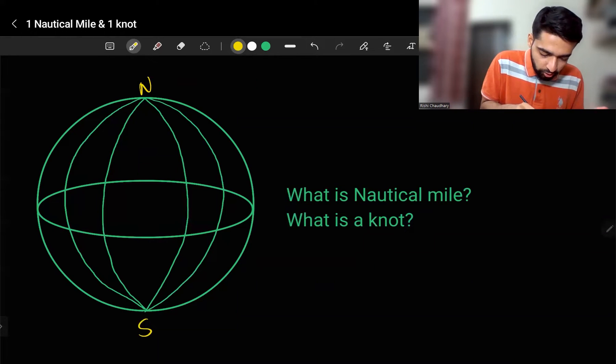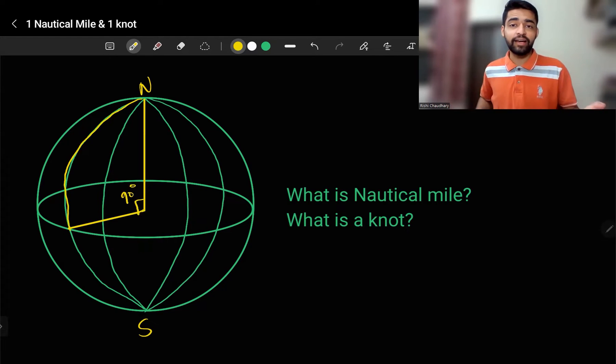Now if I go to the center of the Earth and make an arc like this, this is nothing but my longitude as well as my arc, and this arc is 90 degrees. This is a 90 degree arc.